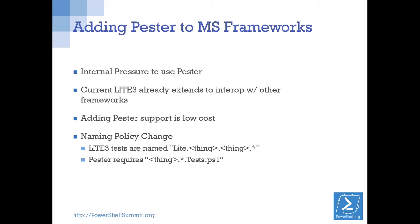One of the other reasons we're looking at Pester very seriously is because we're getting a lot of pressure from internal groups to use Pester — they see it as a very useful unit test framework. We don't support it internally yet. So what we're looking at is extending our current test framework to include support for Pester tests. Adding the support for Pester is actually pretty low-effort. We will have to make a policy change with regard to what we call our tests because Pester requires a certain name before it will invoke a test. We'll change the way we name our new tests, and once the framework is present it should just start lighting up in our environment.